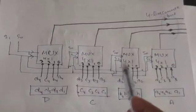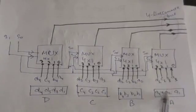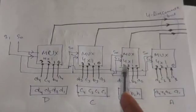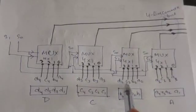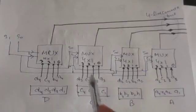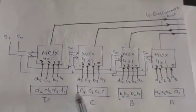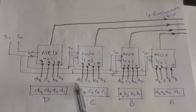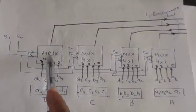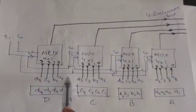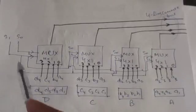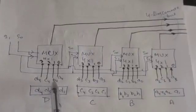In the second multiplexer, all the second bits of all registers — A2, B2, C2, and D2 — are applied as inputs. Similarly, in the third multiplexer, the third bits A3, B3, C3, and D3 are applied as inputs. And in the fourth multiplexer, the fourth bits A4, B4, C4, and D4 are applied as inputs.